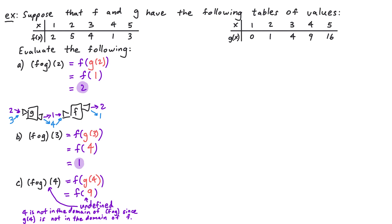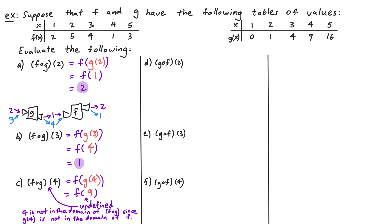When we do compositions of functions it doesn't always have to be f composed with g — we can do other compositions. In these next examples we'll look at g composed with f. When we do a composition, the function on the left is the outer function and the function on the right is the inner function. So g composed with f of 2 means we're doing g of f of 2. We work from the inside out: f of 2 first. Looking at the table for f, when the input is 2 the output is 5, so f of 2 is equal to 5. Now we compute g of 5. Looking at the table for g, when the input is 5 the corresponding output is 16. So g composed with f of 2 equals 16.